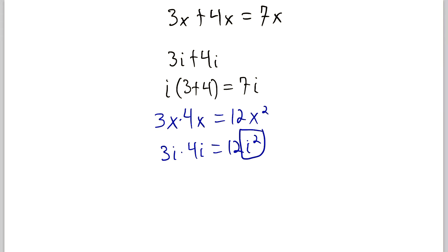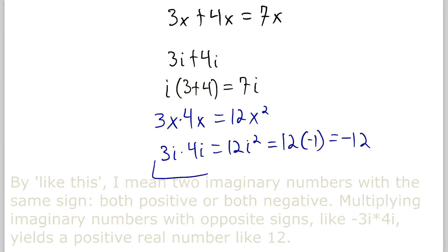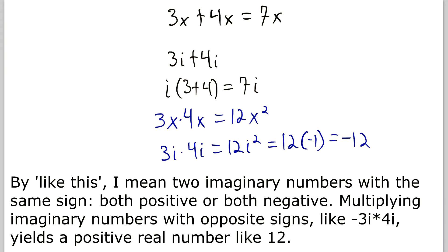But we know more or less what i is, and we know exactly what i² is. i² is equal to -1 by definition. So 12i² is equal to 12 multiplied by -1, and that, of course, is equal to -12. So if we multiply two imaginary numbers like this, we end up getting a negative real number, which is really quite something.